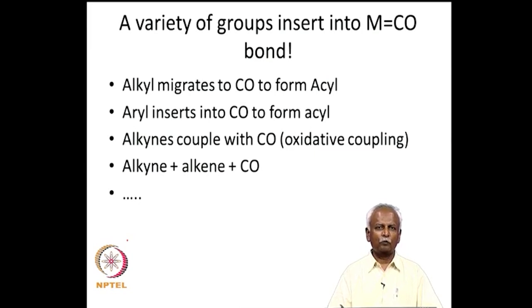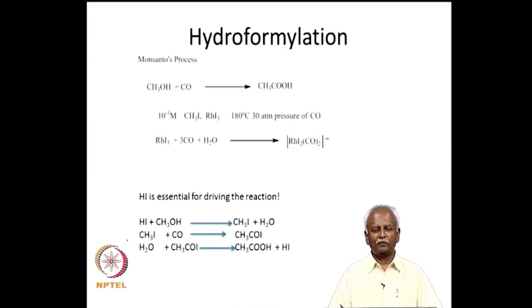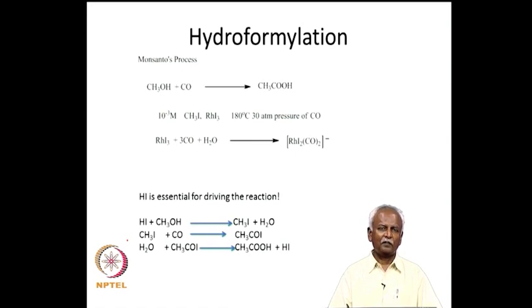We will consider each one of these initially separately and then look at some complicated reactions where multiple groups are involved. In all of these reactions, carbon monoxide is activated and it is made possible for a reaction between the unreactive carbon monoxide — now coordinated to the metal — and an alkyl group, aryl group, or a vinyl or allyl group. Let us take up the first reaction, which belongs to the carbonylation of methanol.